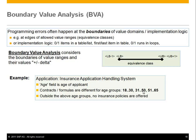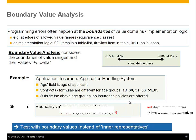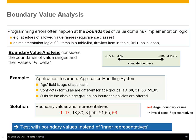If you want to consider boundary values, you don't just pick an inside value — you also pick the boundary values on purpose: 18 and 30, 31 and 50, and so forth, plus some illegal values. So instead of one middle value per equivalence class, you take both boundaries and also the outside boundaries. The outside boundaries may be the beginning of the next equivalence class if they are side by side, and that's okay.